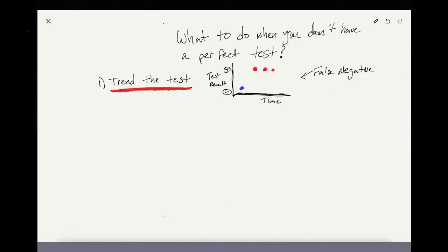In this case, here's an example of the initial test as a false negative, and then repetitive tests show positive, and you're like, okay, this patient has the disease. So the trend informed you that the patient was positive.